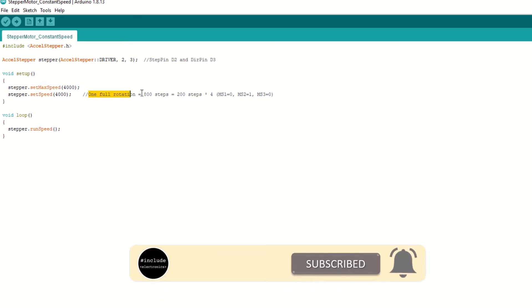Inside setup function, set the max speed as 4000 steps. We will be using one-fourth micro stepping mode. Then set the required speed. We will set it to 4000 steps which is 5 rotations per second. This motor needs 200 steps per rotation in normal mode, so in one-fourth micro stepping mode we will need 800 steps for complete one rotation. Inside loop function we need to call runSpeed function.